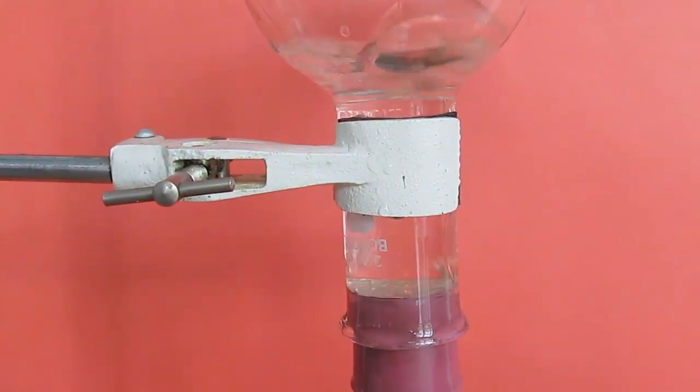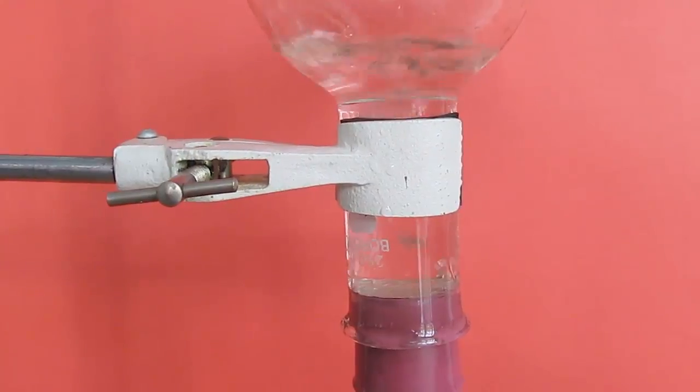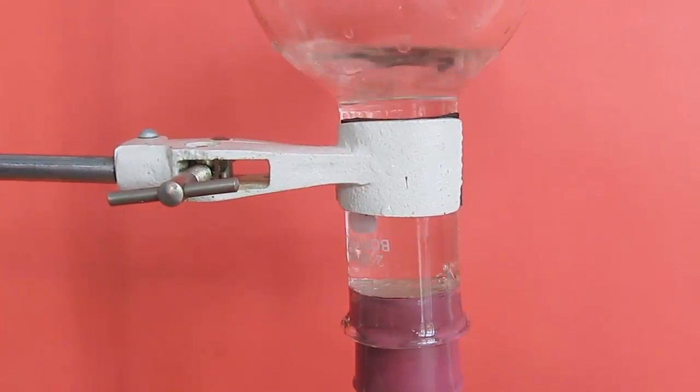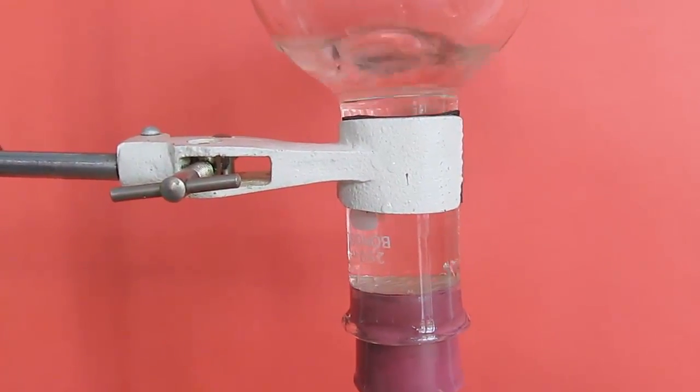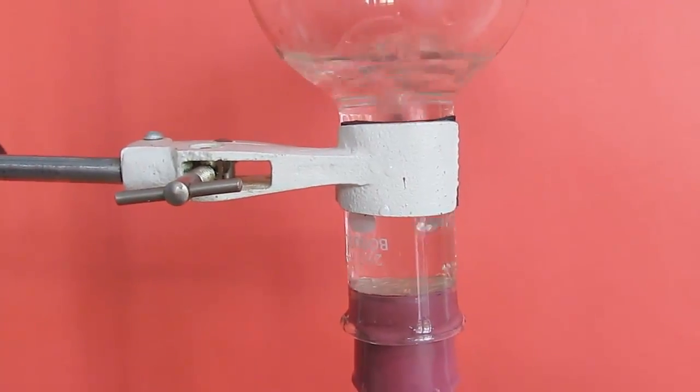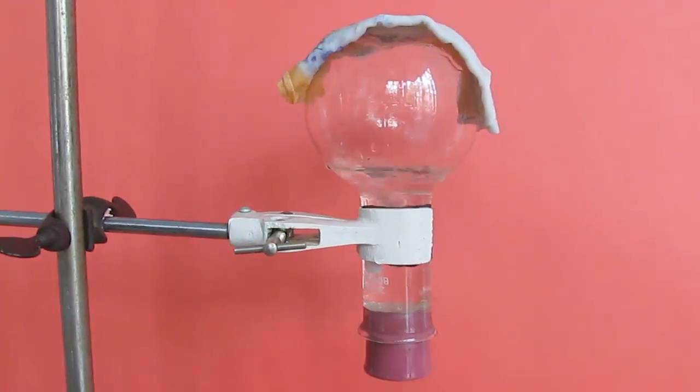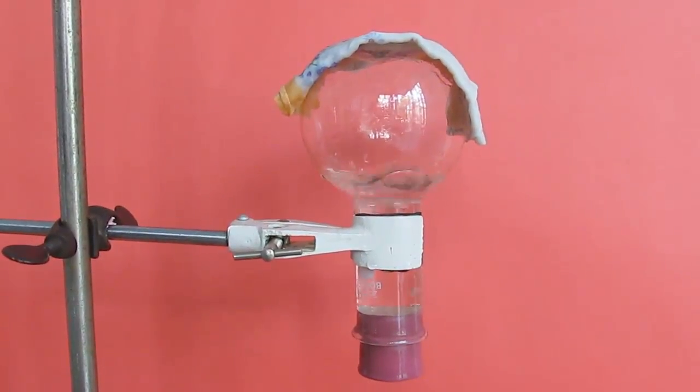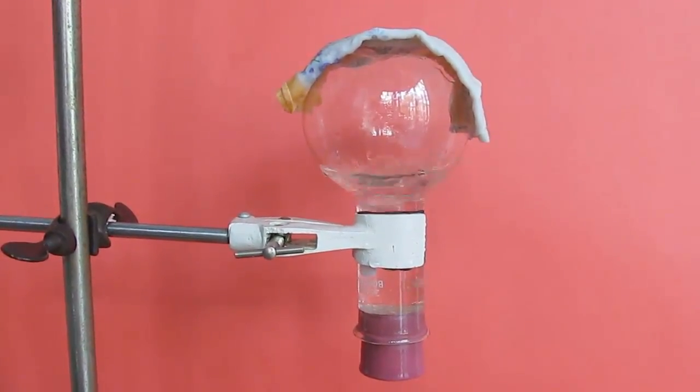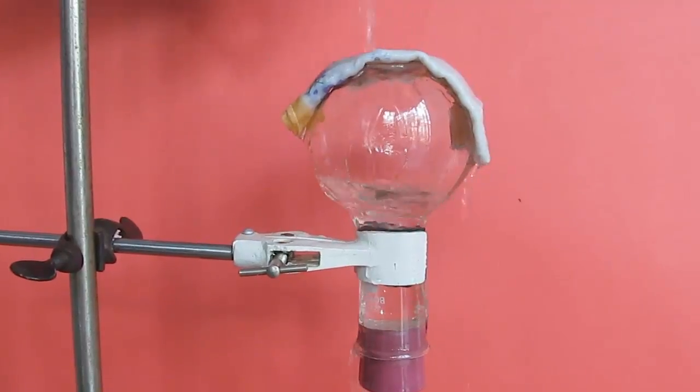A liquid boils at a temperature when the vapor pressure is equal to the pressure of the gas above it. In this case when we put water on top of the glass, the pressure of the gas inside the flask goes down and hence the vapor pressure or molecules of water can become gas at much lower temperature.